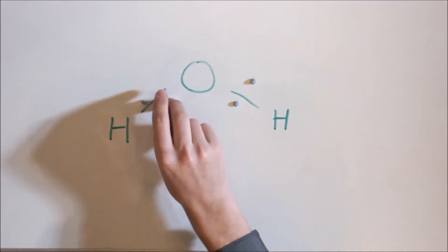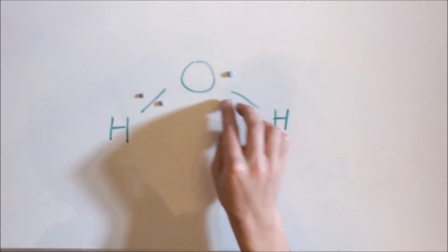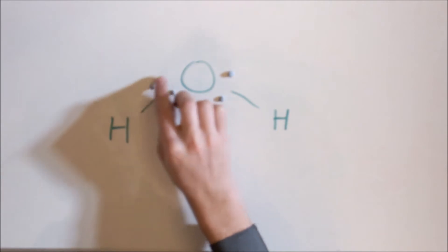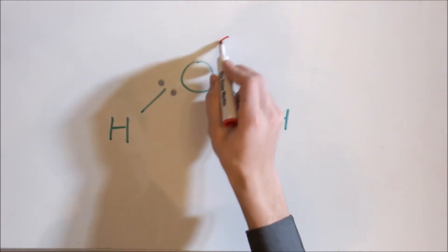These bonds are known as polar bonds because the negative electrons are closer to the oxygen atom due to its stronger pull. This creates an imbalance of charge over the whole molecule, called a dipole.